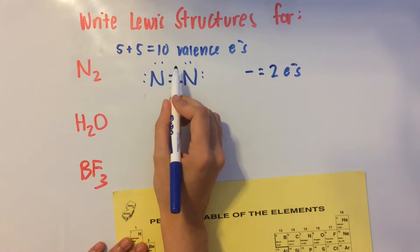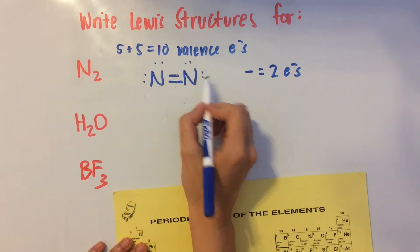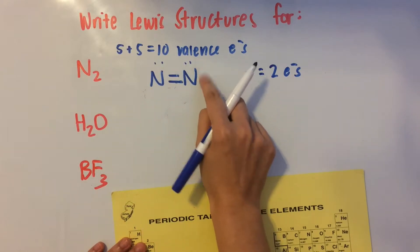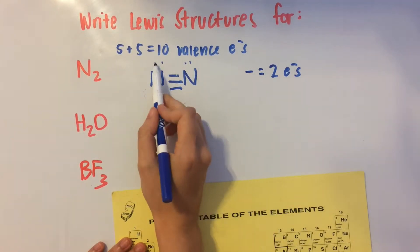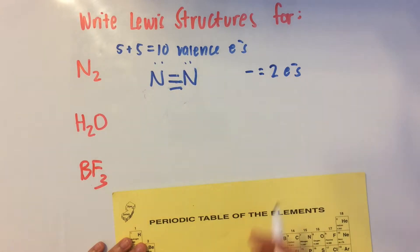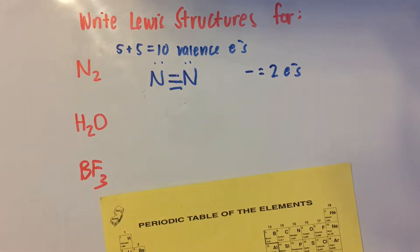Now let's count how many electrons we have again. 1, 2, 3, 4, 5, 6, 7, 8, 9, 10, 11, 12. Okay. It looks like we just got to get rid of one more pair and we should be good. 1, 2, 3, 4, 5, 6, 7, 8, 9, and 10. And that's the Lewis structure for N2.